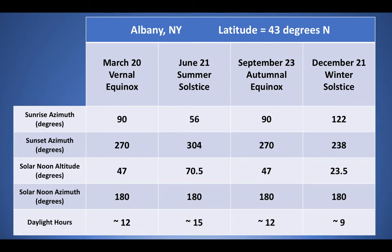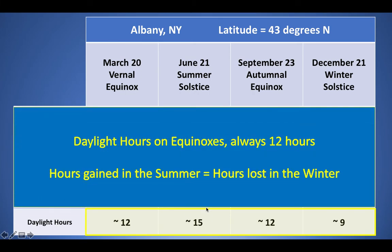The last pattern involves the number of daylight hours. The equinoxes — both the March 20th vernal and the September 23rd autumnal — will always have 12 hours of daylight and 12 hours of darkness. For June and December solstices, if you know one you can figure out the other: the number of hours gained in summer is equivalent to the number of hours lost in winter. So if you gain three hours from the equinox to the summer solstice to make it 15 hours, you will lose three hours going from the autumnal equinox to the winter solstice.